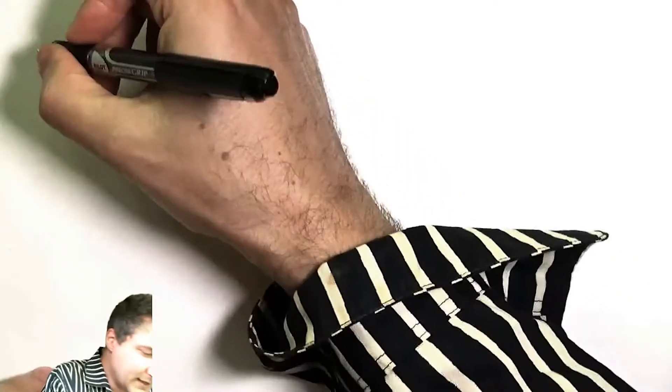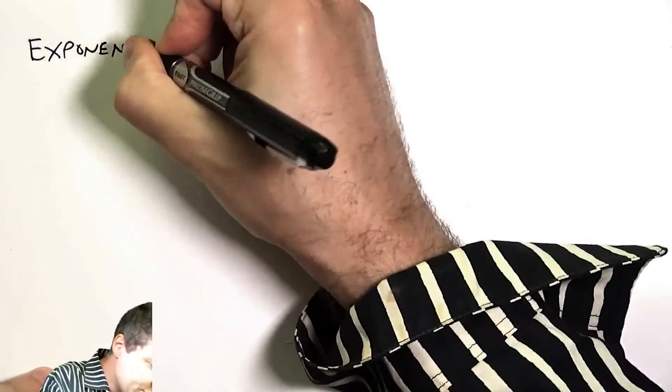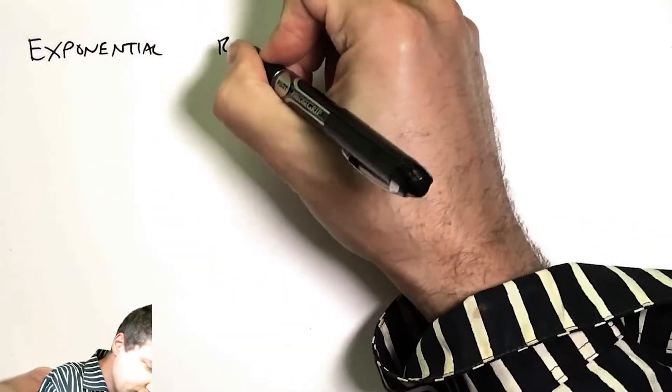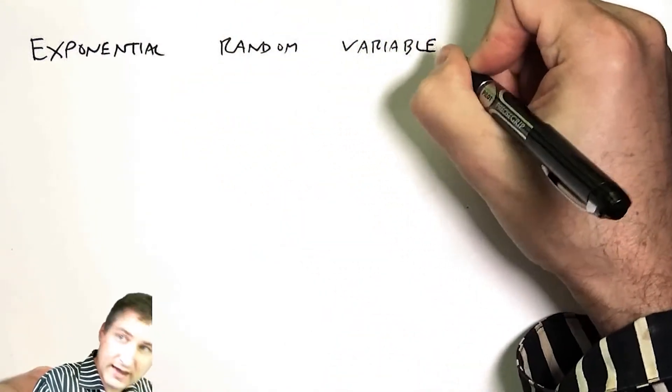Last time we introduced the concept of continuous random variables and mostly talked about the uniform random variable. Now I want to introduce a new random variable called the exponential random variable.